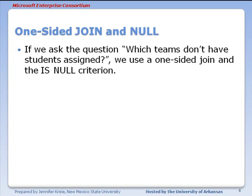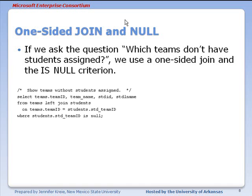If we ask the question, which teams don't have students assigned, we would use a one-sided join as though we want to see all teams, but then use the is null criterion to limit the output to only teams without students. So we set up our command, select in our column names, from teams and all teams. So I'm using a left join to students. And then we have the student team ID is null.